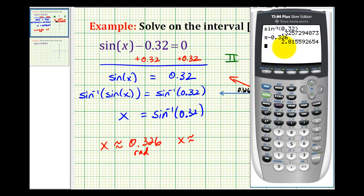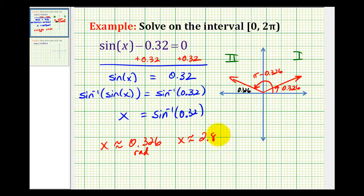So the angle in the second quadrant is approximately two point eight one six radians. So when using the calculator to determine the solution to a trig equation, it is important that you make sure you get all of the solutions on the given interval.